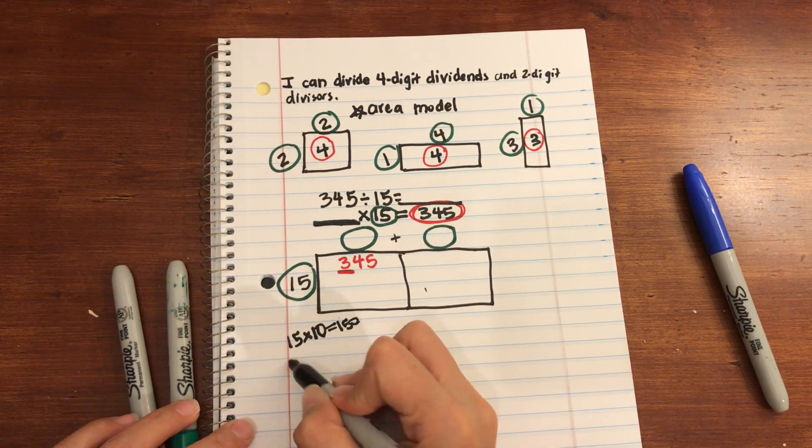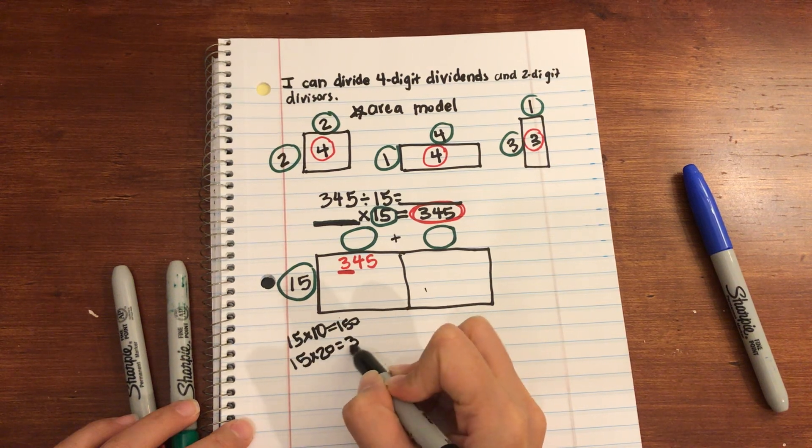So 150, I know I can do better than that. 15 times 20 is 300.